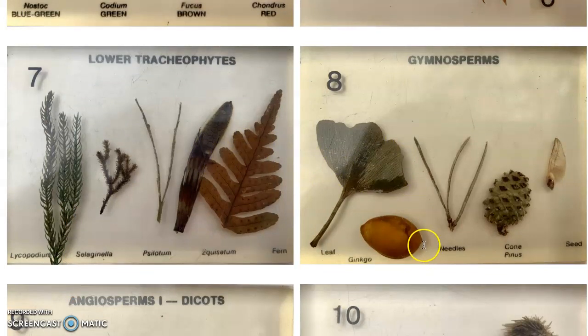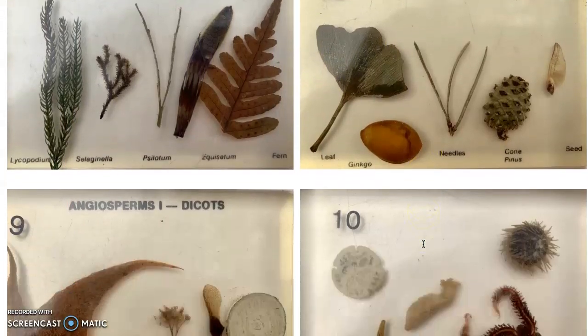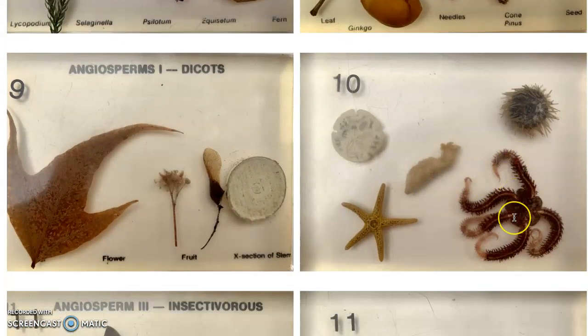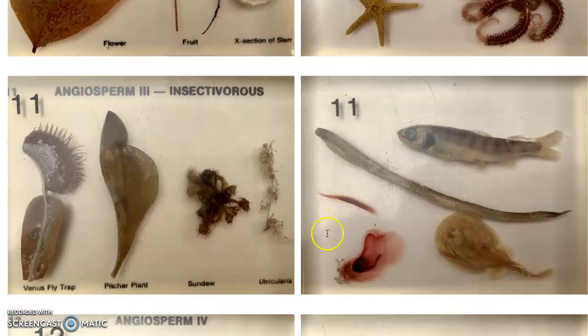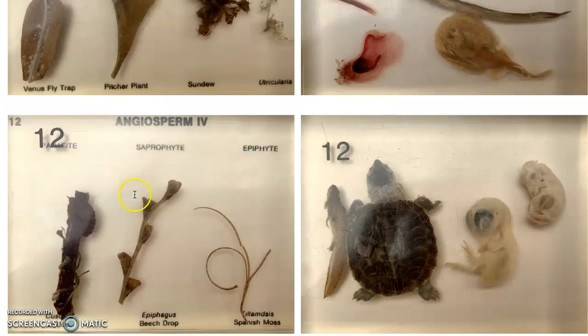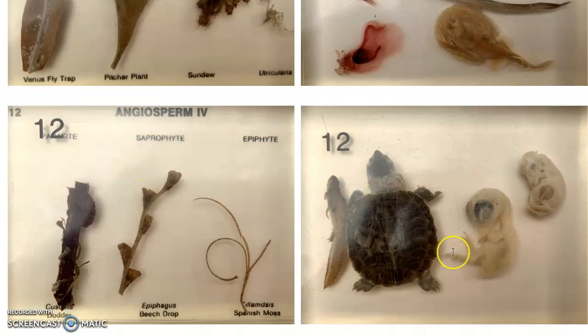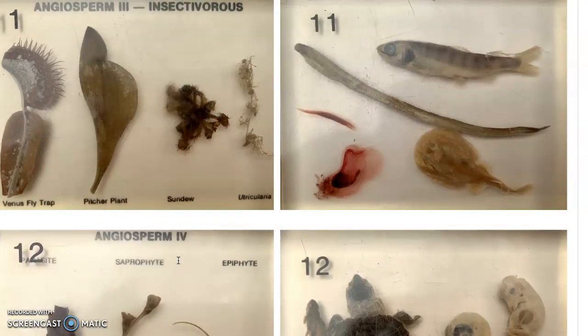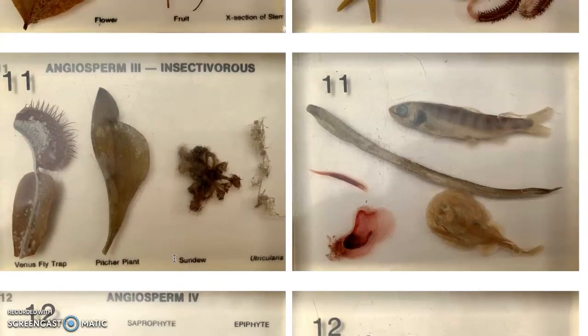You could also do these for your science diagram: some starfish and urchin, some fish, little ray, there's a Venus flytrap, little turtle, some developing chicken, different plants here. There's several different organisms that you can choose from to do your dichotomous key and for your diagrams as well.